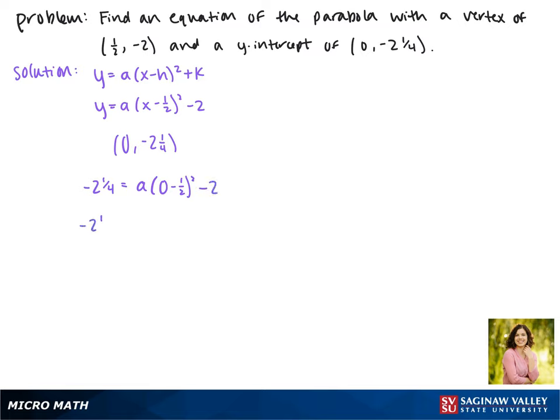So negative 1 half squared is 1 fourth. This gives us 1 fourth a minus 2 on the right.